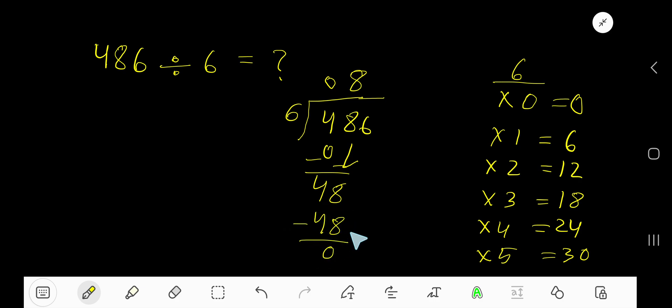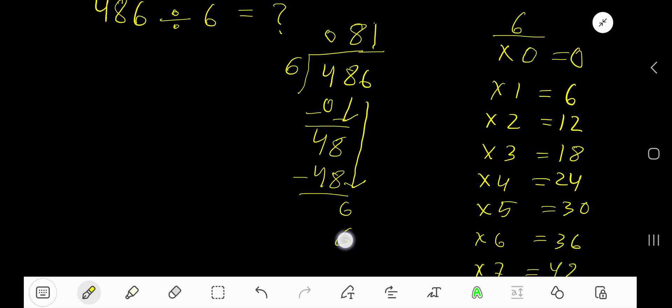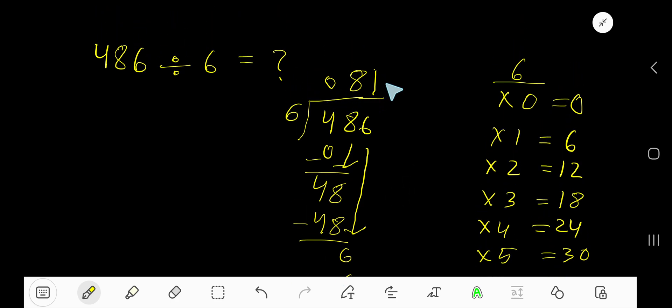Subtract to get 0. Bring down this 6. 6 goes into 6 how many times? 1 time, right. 1 times 6 is 6. Subtract to get 0. As our remainder is 0, we are done. So 081 means 81 is our answer.